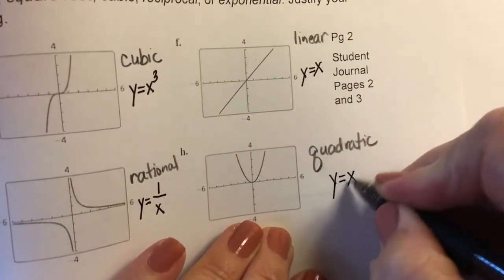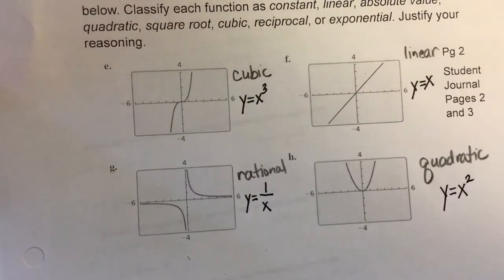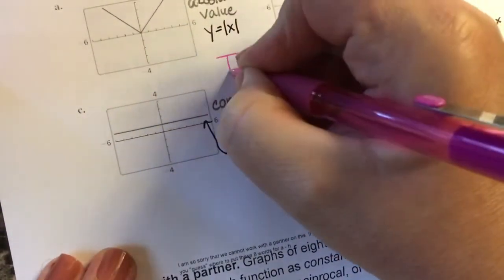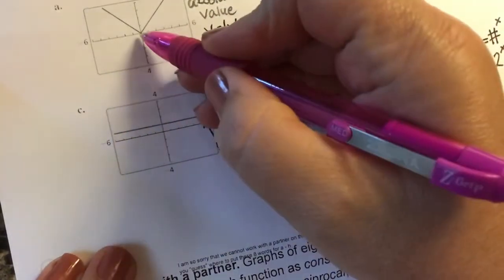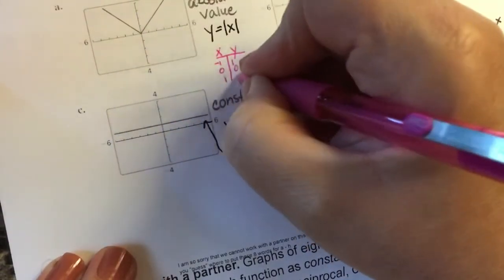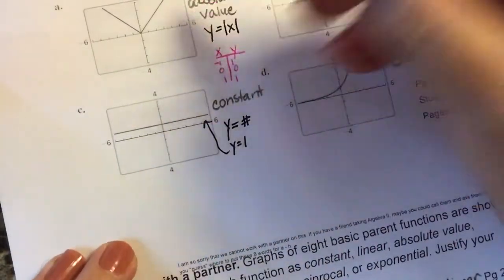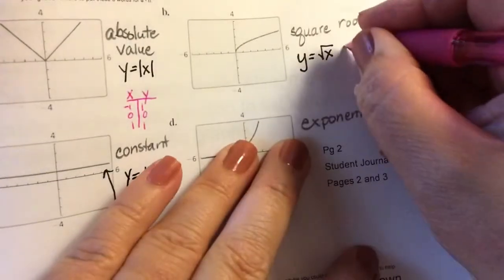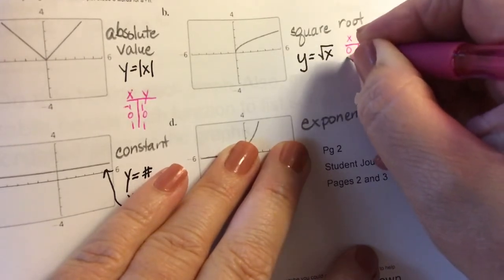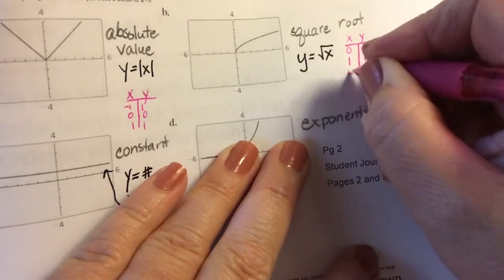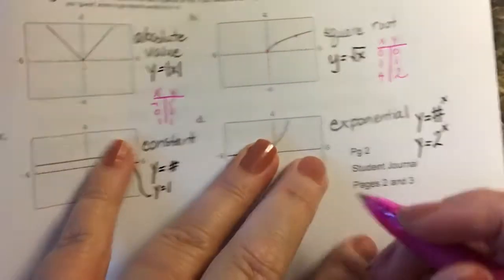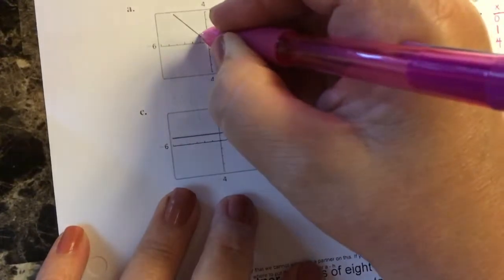Now when you're asked to graph these you're going to need a table of values, and so I'm going to give you the table of values that you should use when you graph these. For absolute value you're going to use (-1, 1), (0, 0), and (1, 1). For square root you're going to use (0, 0), (1, 1), and (4, 2). And c: (0, 0), (-1, 1), (1, 1).